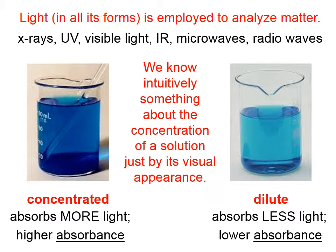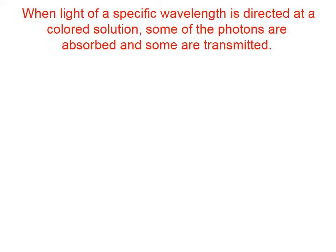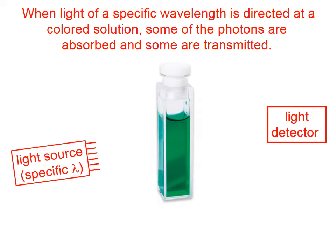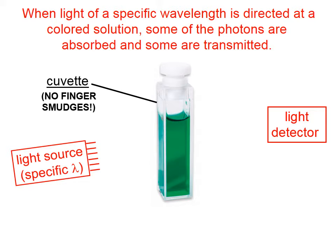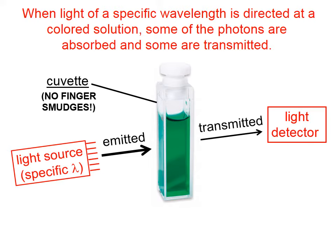When light of a specific wavelength is directed at a colored solution, some of the photons are absorbed and some are transmitted. On the left we have a light source, and in the middle we have our solution contained in what's called a cuvette. It's very important when using a cuvette that you don't touch the outer surfaces, so as to get oils from your skin on the cuvette. On the left we have a source of light set to a specific wavelength, and on the other side of the sample we have a detector of light. Our light source emits a certain intensity of light, and what goes through the solution is what we call the transmitted light.